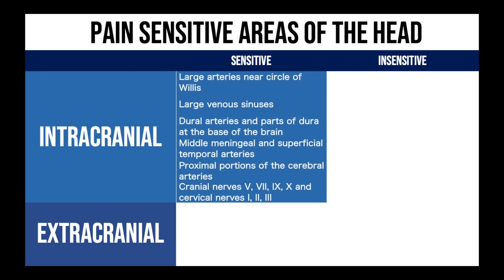Intracranially, the sensitive areas are large arteries near the circle of Willis, large venous sinuses, dural arteries and parts of the dura at the base of the brain, middle meningeal and superficial temporal arteries, proximal portions of the cerebral arteries, cranial nerves 5, 7, 9, 10, and cervical nerves 1, 2, and 3.